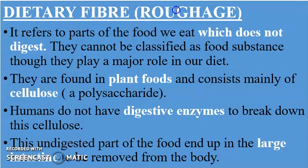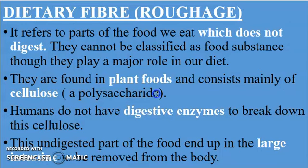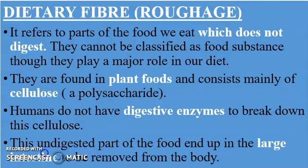Now let's look at dietary fibers, or the roughage. Dietary fiber refers to parts of the food we eat which do not digest. They cannot be classified as food substances, though they play a major role in our diet. They are found in plant foods and consist mainly of cellulose, which is a polysaccharide — a many-chained carbohydrate. Humans do not have digestive enzymes to break down cellulose, so this undigested part of the food ends up in the large intestine — that is the colon — where it is removed from the body.